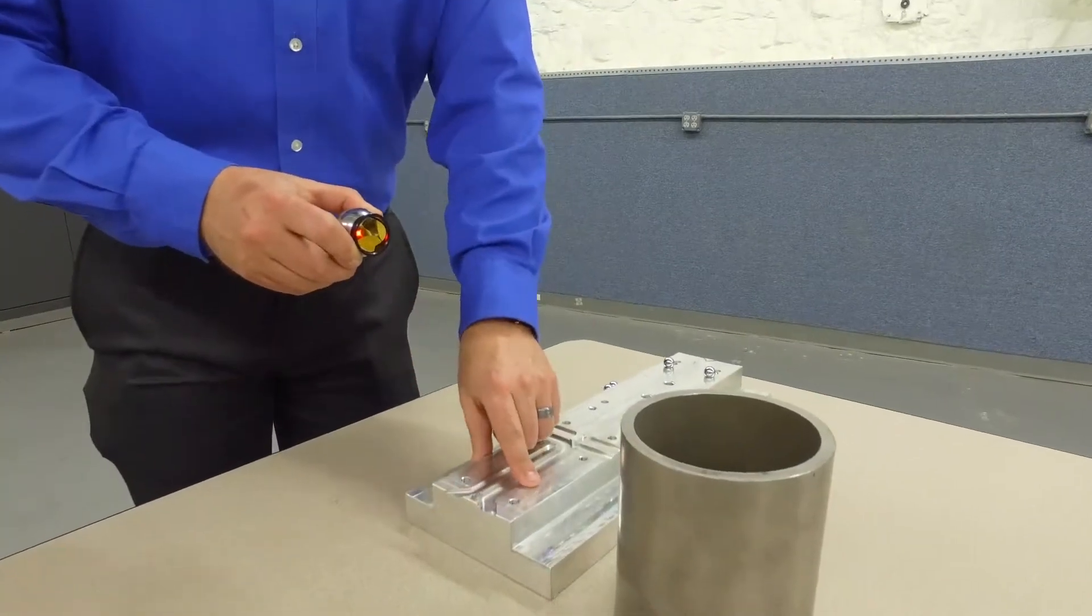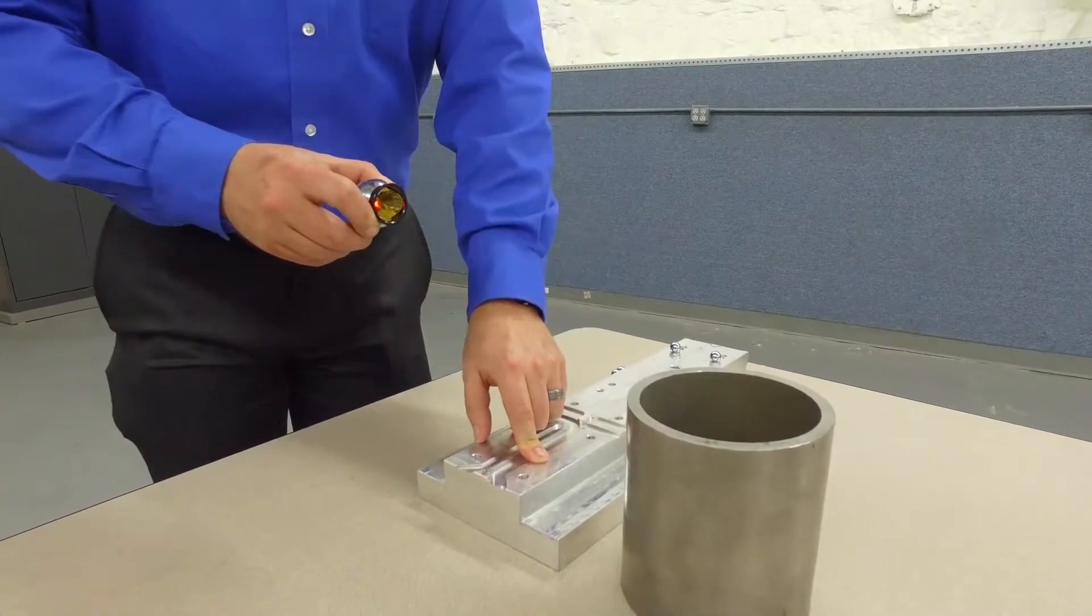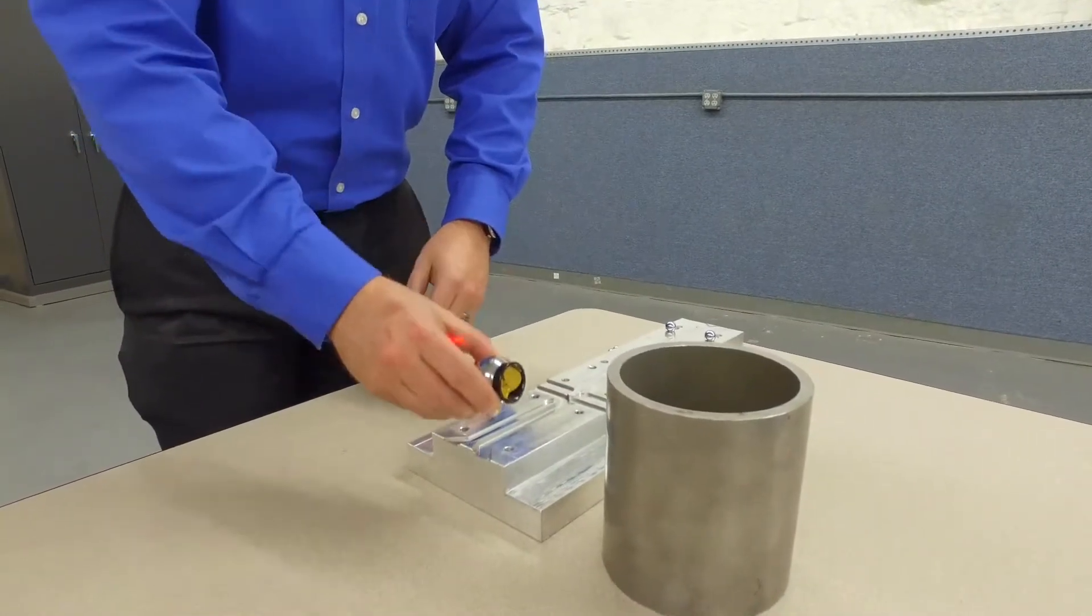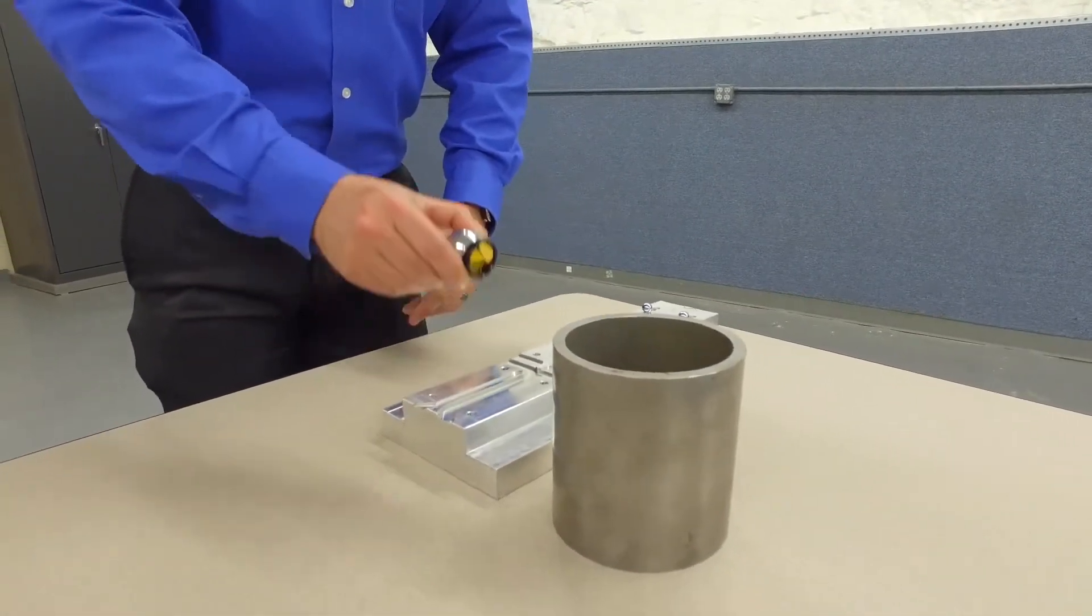Imagine we need to measure this particular location on your part, but unfortunately this steel piece is blocking the SMR from making that measurement directly.